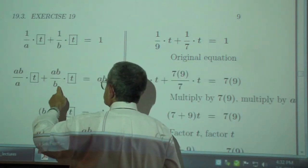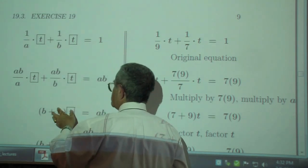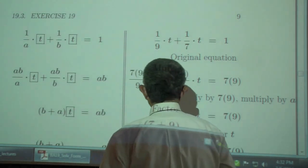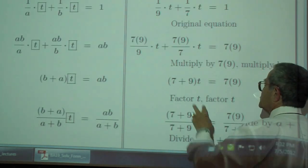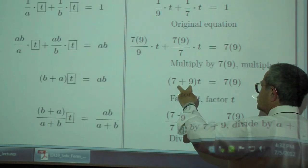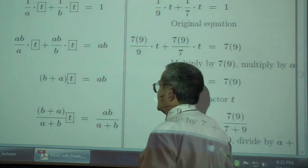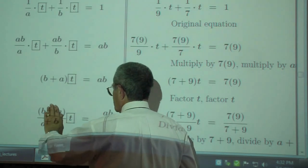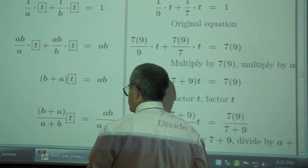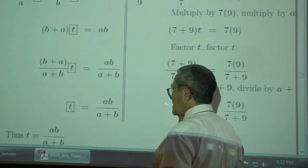This is B T plus A T. And you can factor out the T, which is AB. So, you can factor out the T. And then divide by this number, which is 16. Keep it as 7 plus 9. Divide by this 16. Keep it as A plus B. So, both sides. That's just T. That's what you wanted. T is AB over A plus B.